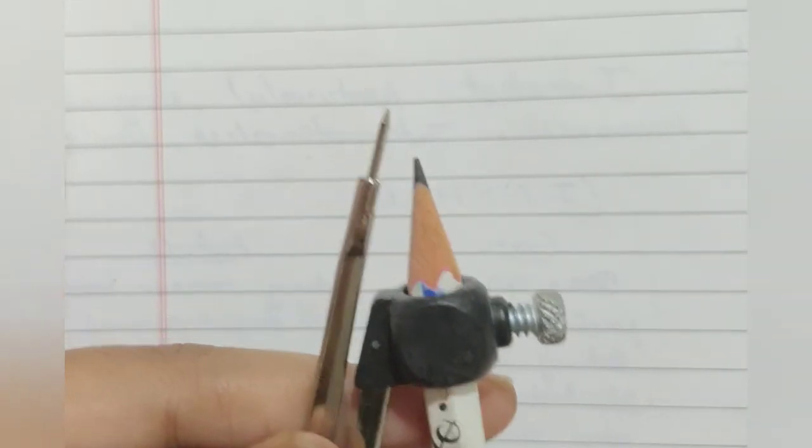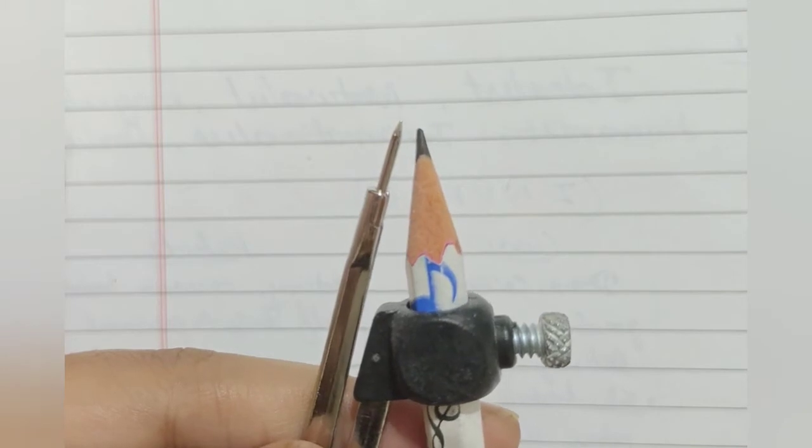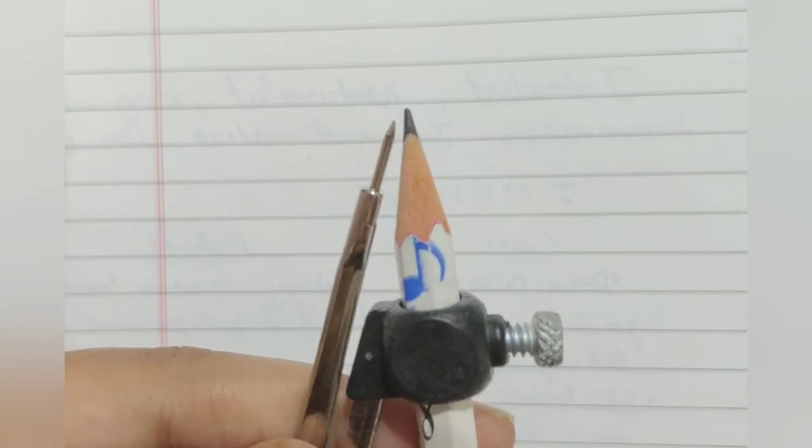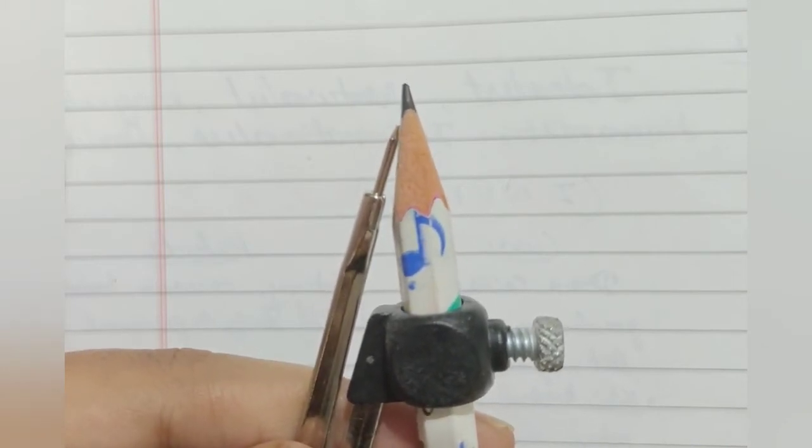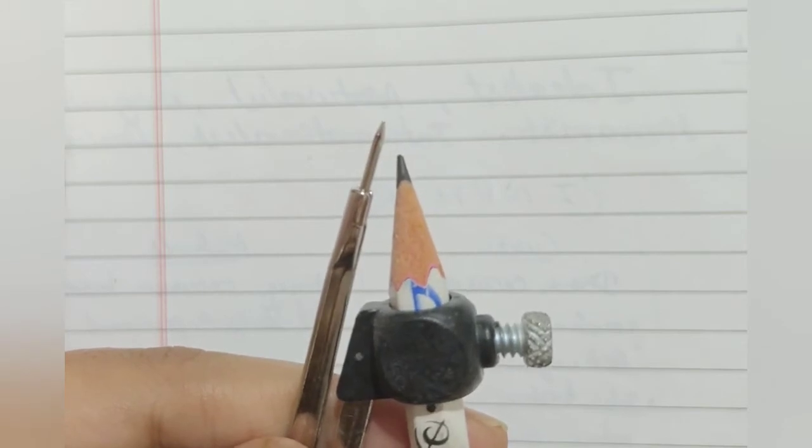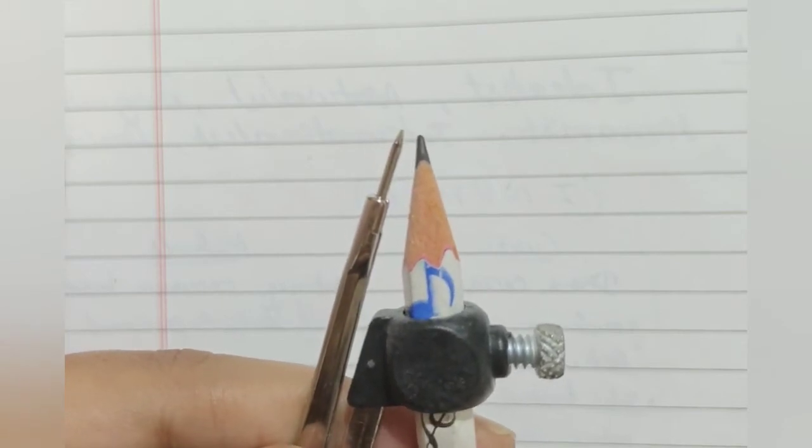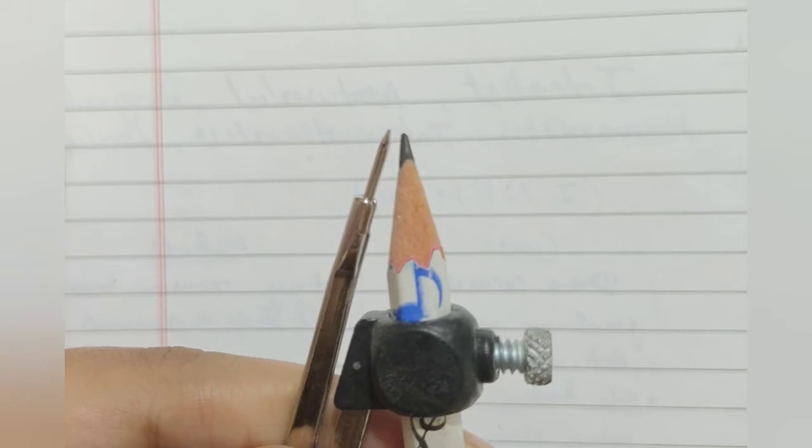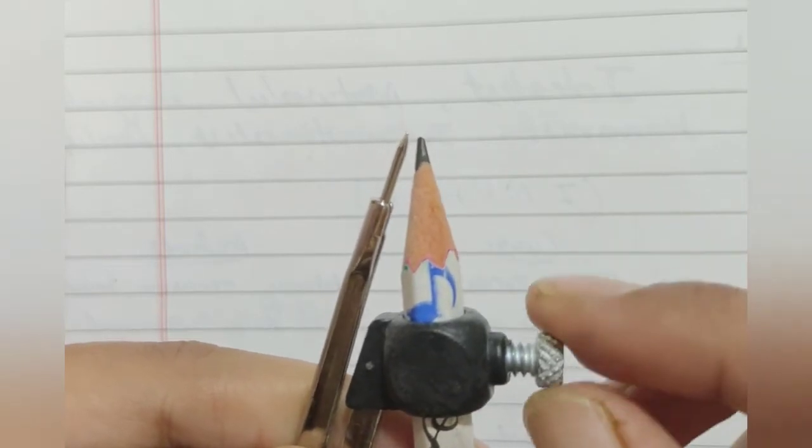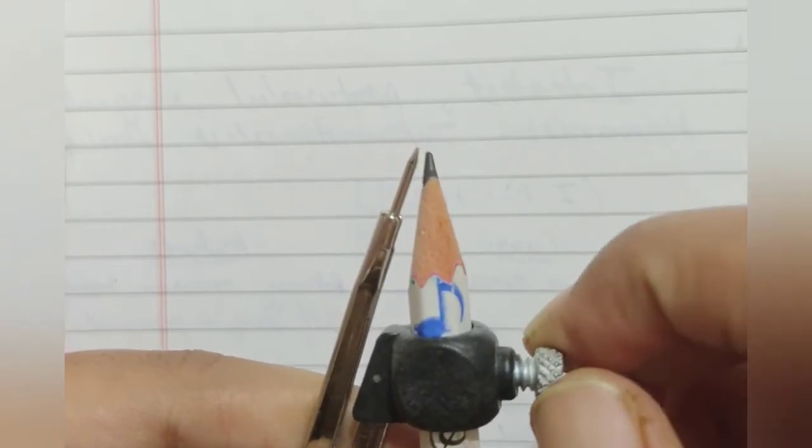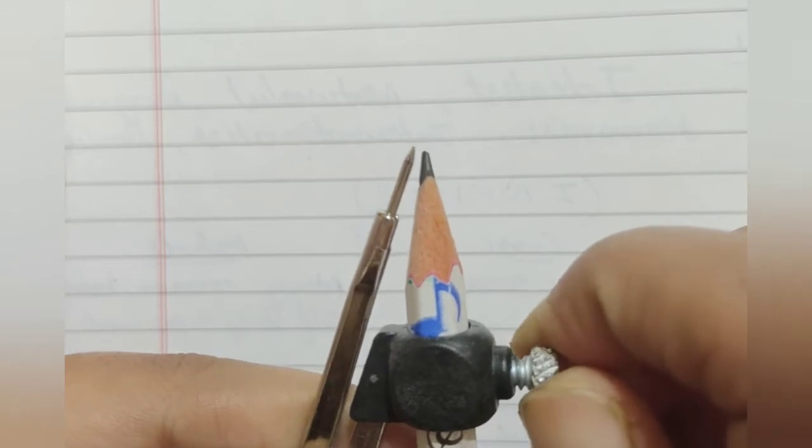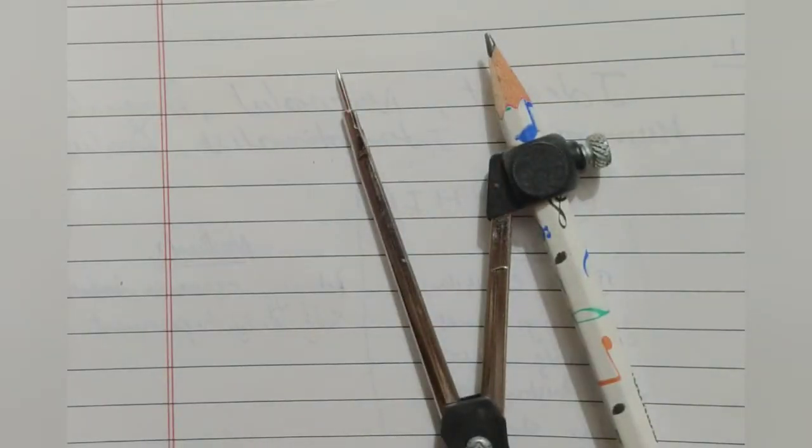Now put your pencil inside your compass like this. Make sure that your pencil does not surpass it or just lag behind it. No, it should be on the same level of this nib. Clear? And then, tight the screw of your compass. So, here your compass is ready to make a circle. Now, we will see how to make a circle by using this compass.